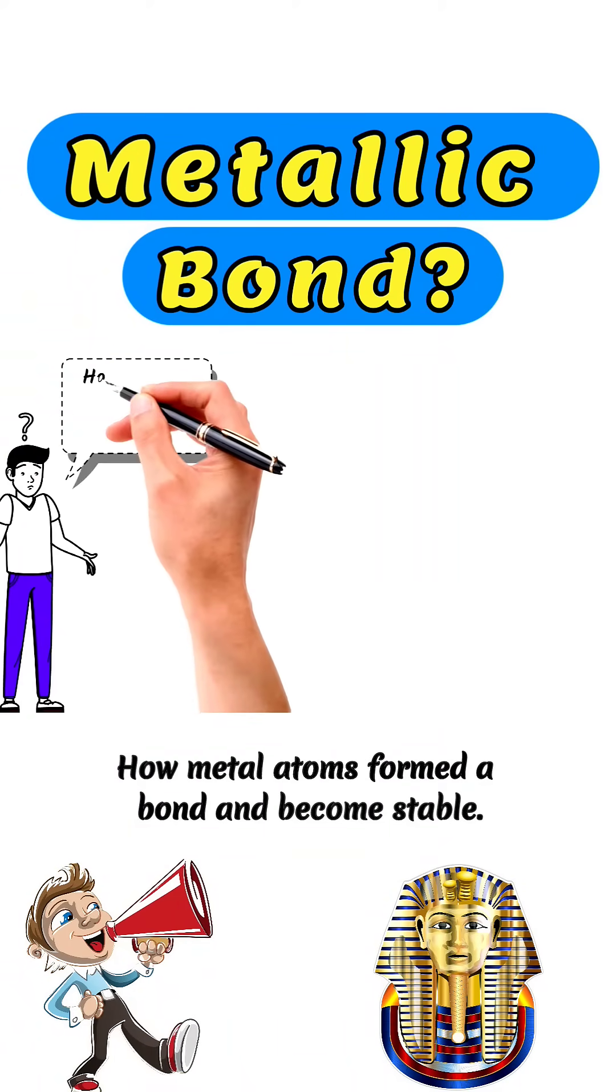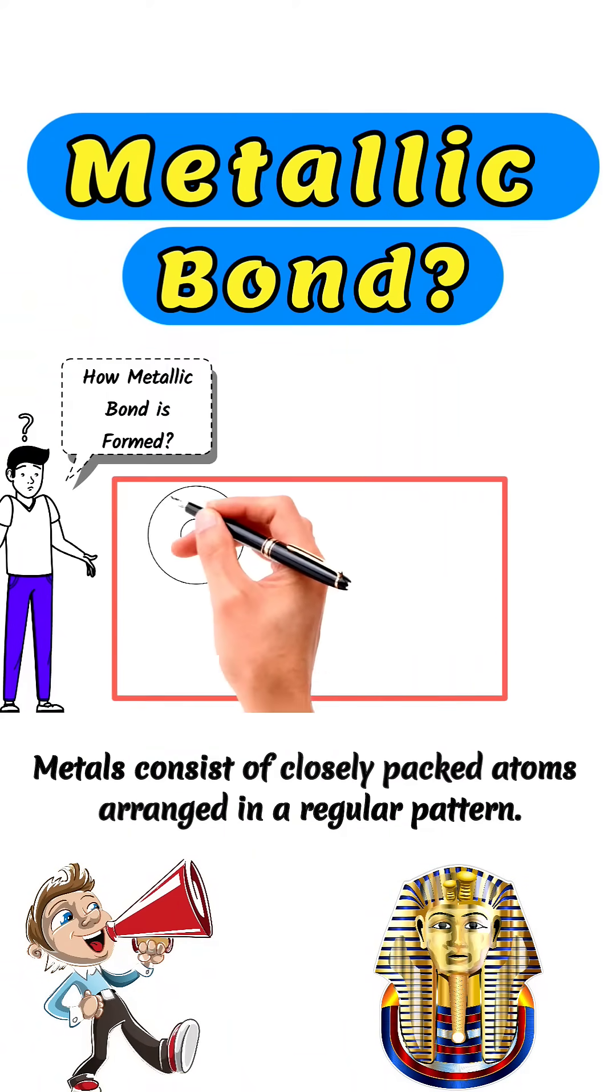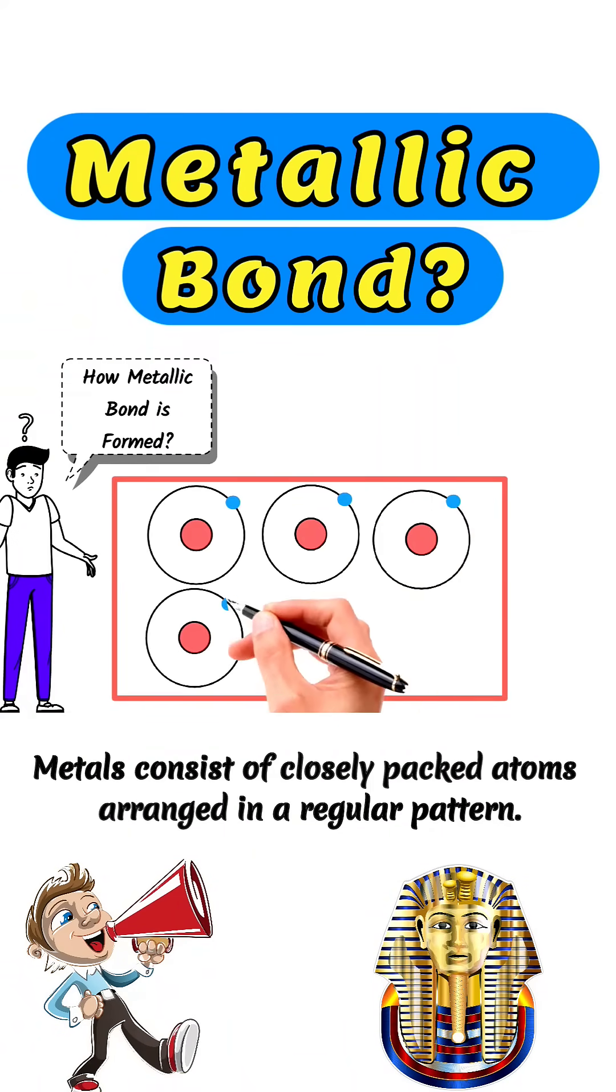How metal atoms form a bond and become stable. Metals consist of closely packed atoms arranged in a regular pattern.